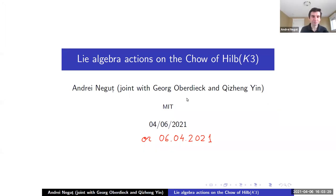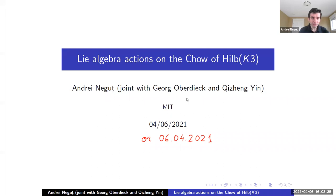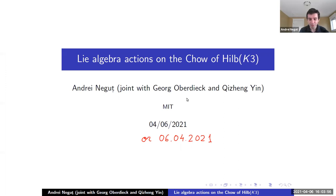Thank you so much. The invitation is fantastic, and I'm very happy to be here. I'm particularly happy to get the chance to talk about this in the derived seminar, even though there will be no derived categories in this talk. I hope that's no reason to kick me out of the Zoom room. Some of what I hope are your favorite mathematical objects will feature in this talk, namely holomorphic symplectic varieties.